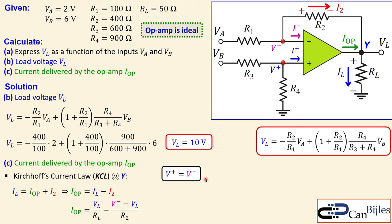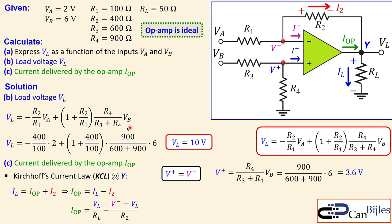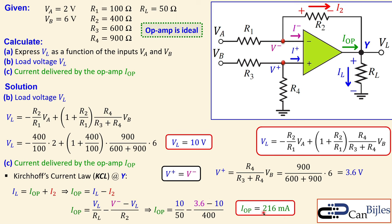Using the voltage divider result, V+ equals R4 over (R3 plus R4) times Vb. Substituting values gives V+ equals 3.6 volts. Due to negative feedback, V− is also 3.6 volts. Now substituting into the current equation: IL equals 10 over 50, and I2 equals 3.6 minus 10 divided by 400. Working through the math gives Iop equals 216 milliamps being pushed out of the op amp.